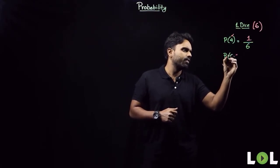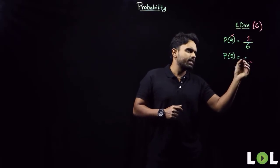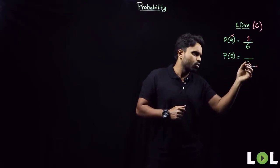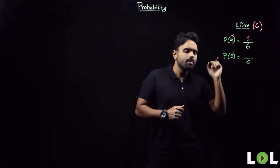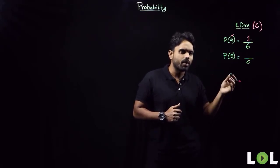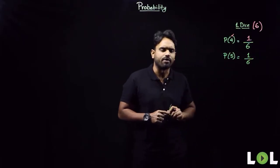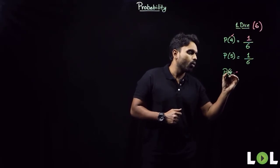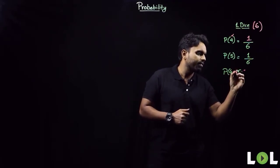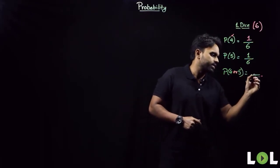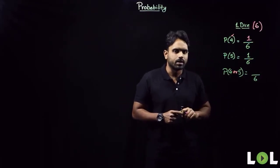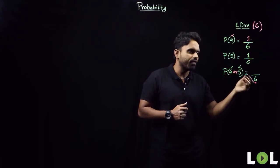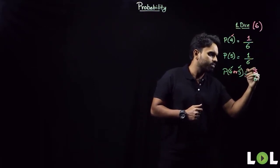If I ask: what is the probability of getting a 5? Starting with the denominator — total number of cases is 6. Favorable case: getting a 5 in only one way. Now, probability of getting a 4 or a 5: total number of cases is 6, favorable cases are 2 (either a 4 or a 5), giving us 2/6 = 1/3.